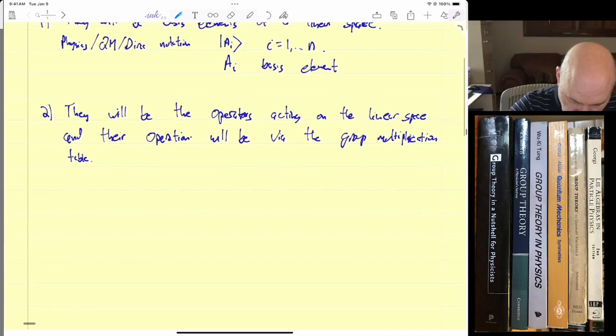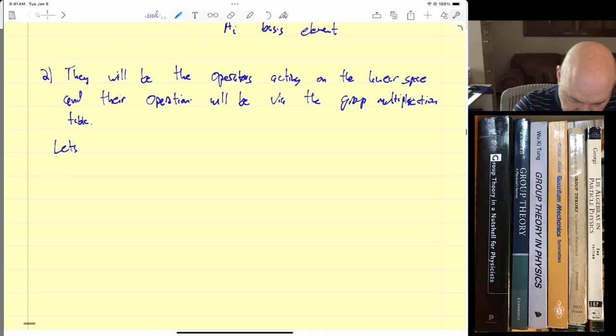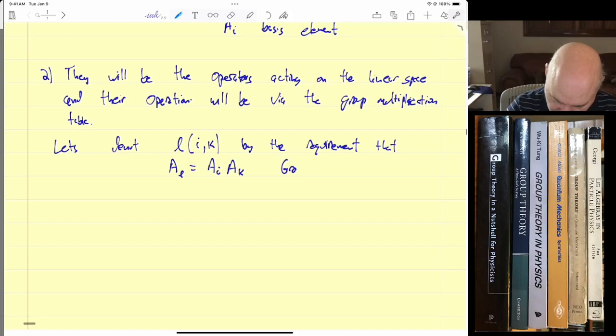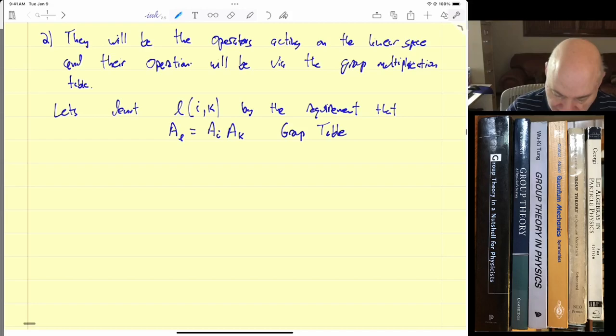So to make this more clear, let's denote L(i,k) by the requirement that A_L equals A_i A_k. So this is just the group multiplication table. And basically, this tells you the relationship. When we multiply A_i by A_k, we get the element A_L.